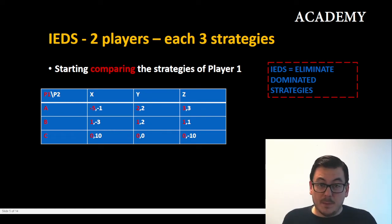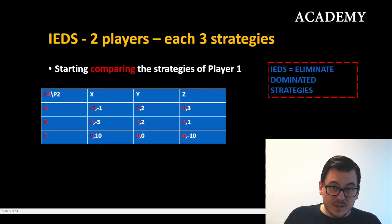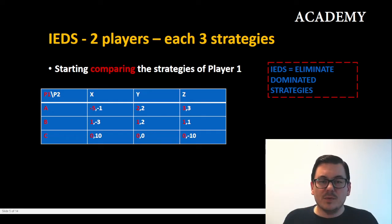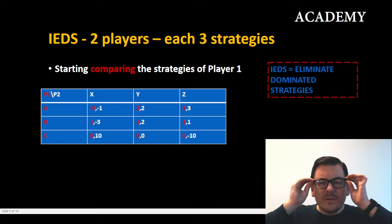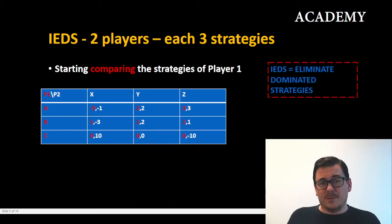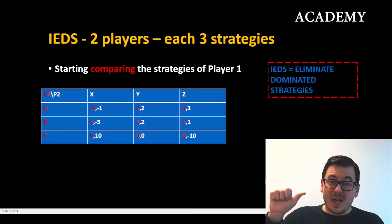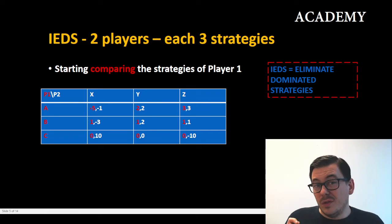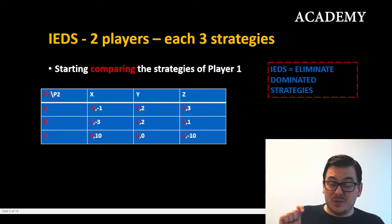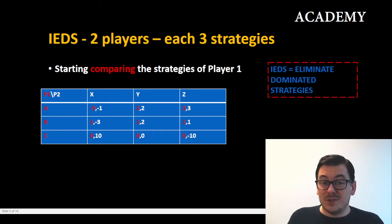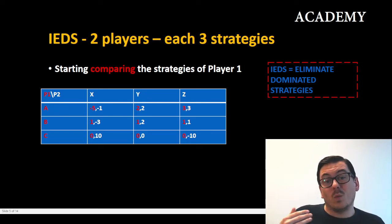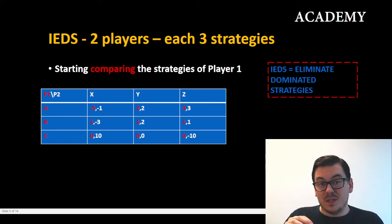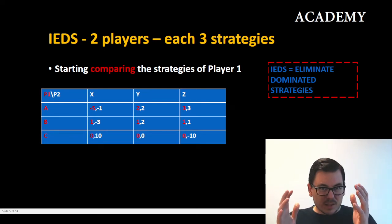Let's look at the method in a game structure. I put up here a strategic form game — two players, each with three strategies. We will start with player one, comparing the different strategies and their payoffs. Player one has strategies A, B, and C. Strategy A gives player one payoffs of minus five if player two chooses X, two if player two chooses Y, and three if player two chooses Z. Strategy B gives payoffs of one, one, one, and strategy C gives zero, zero, zero.